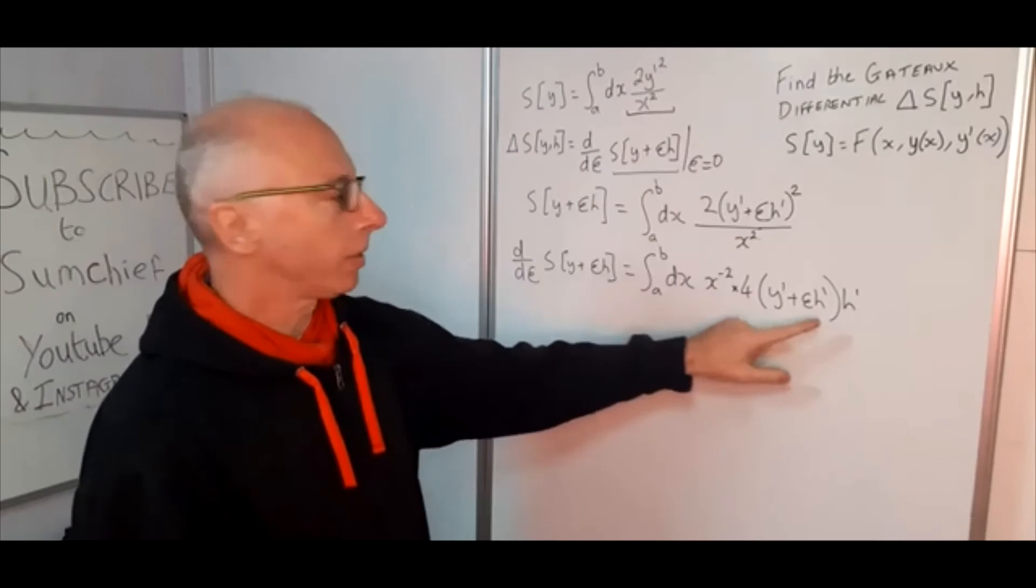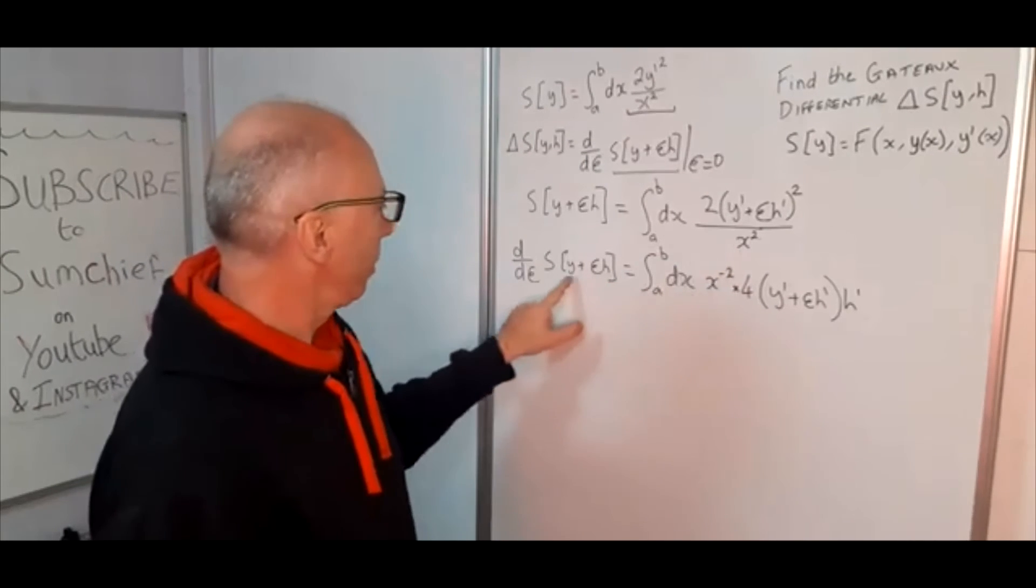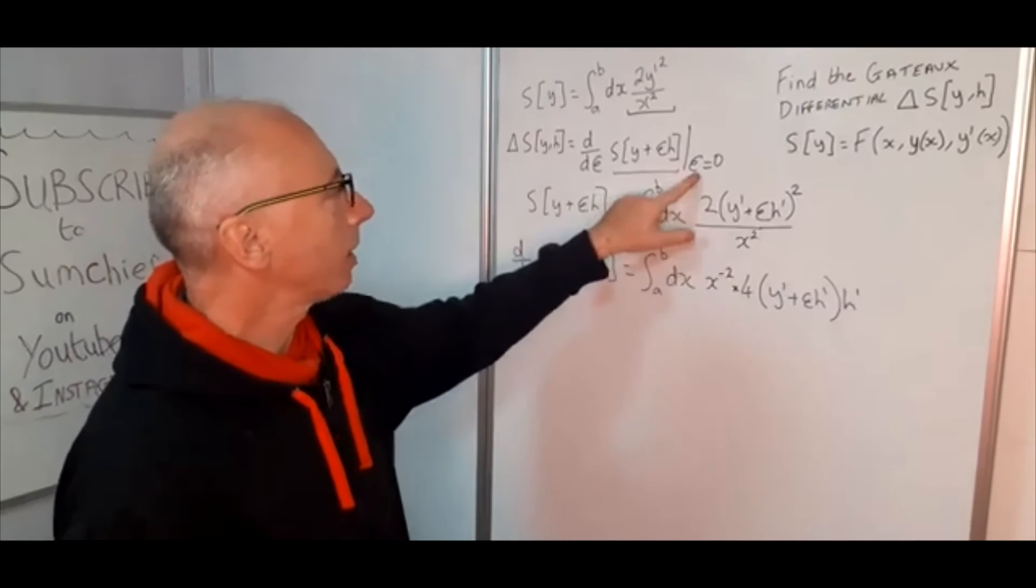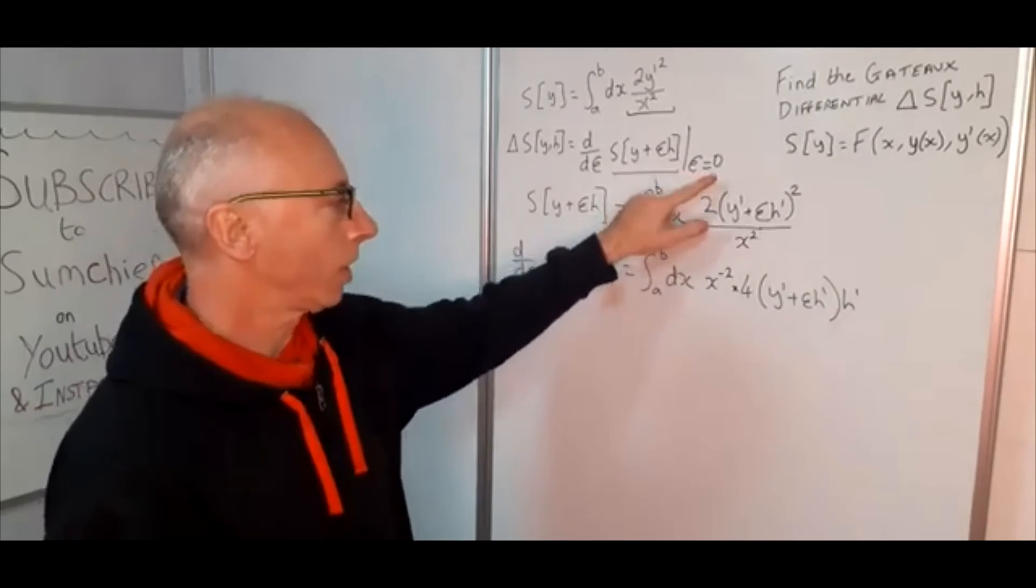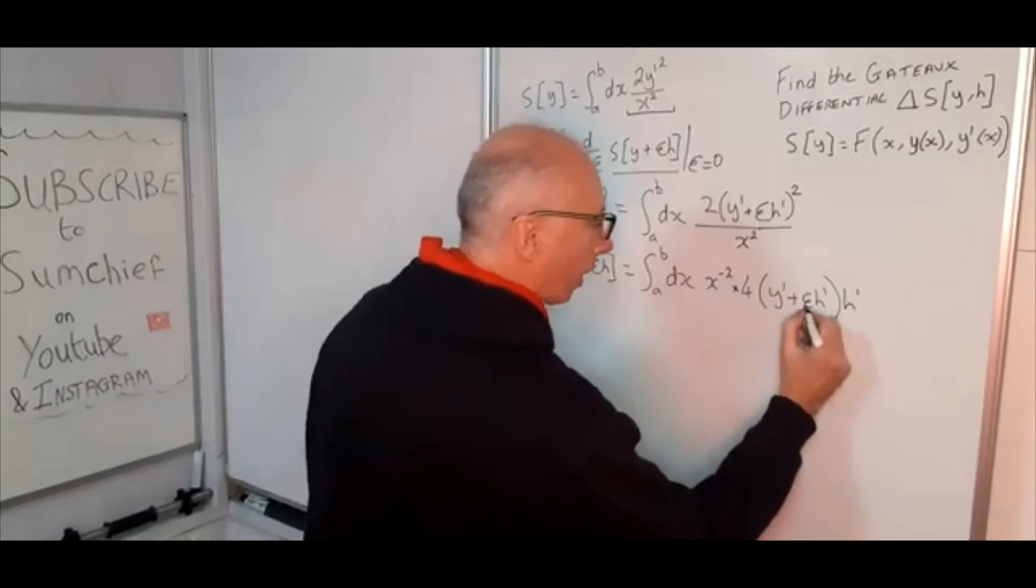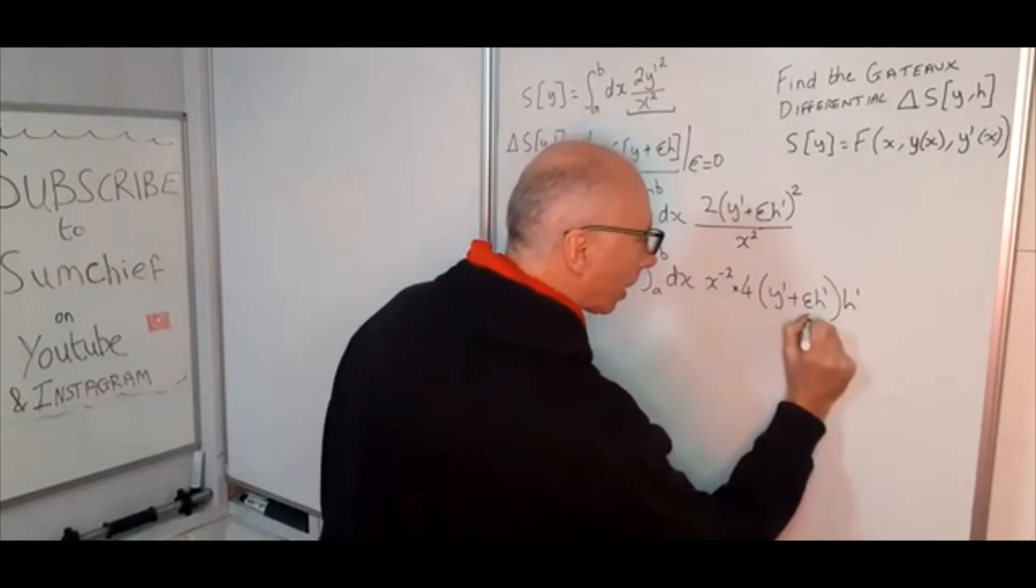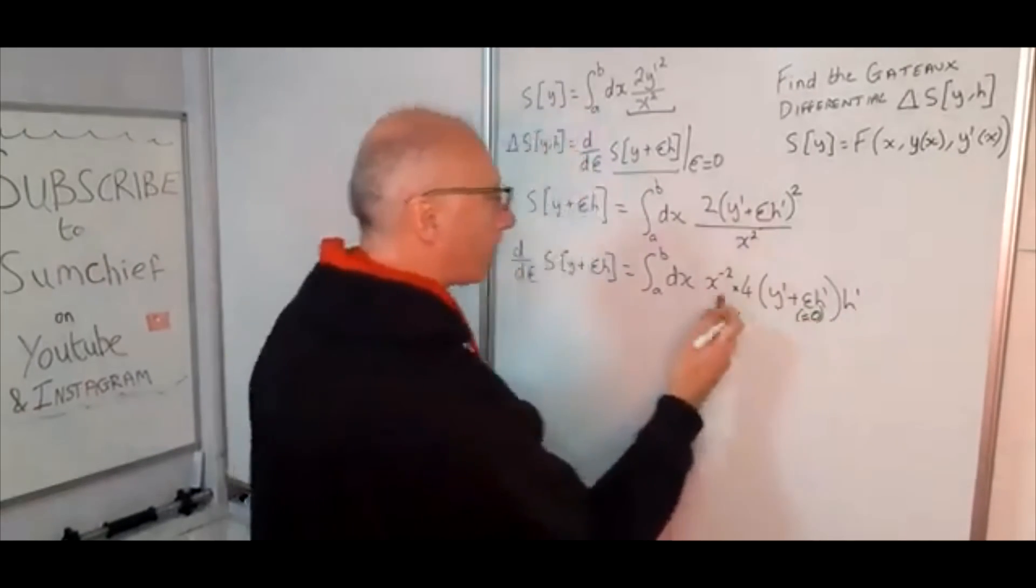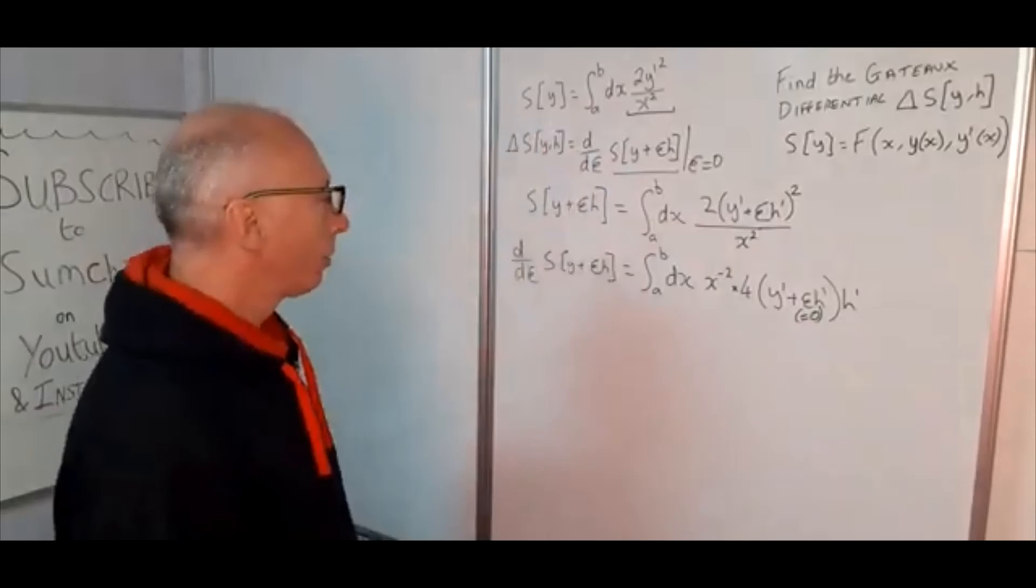So that is where we are up to now, so that is the differentiation with regards to epsilon. Now we need to take the limit as epsilon equals zero. So basically all that means is just put in zero for epsilon. So this bit here will become zero.